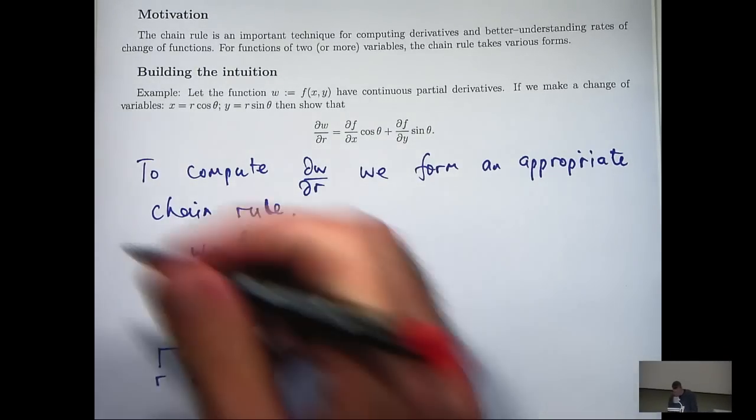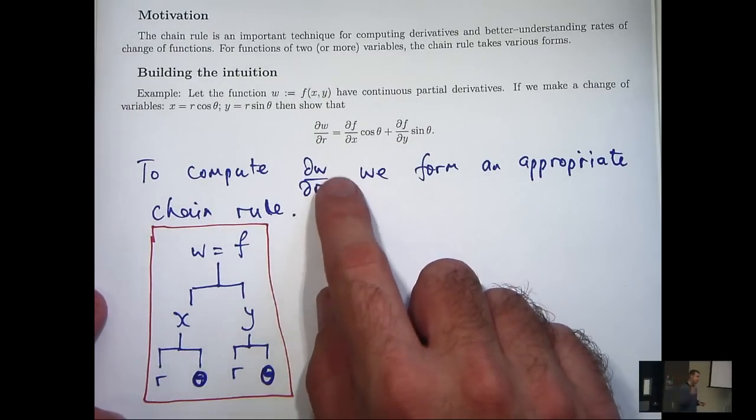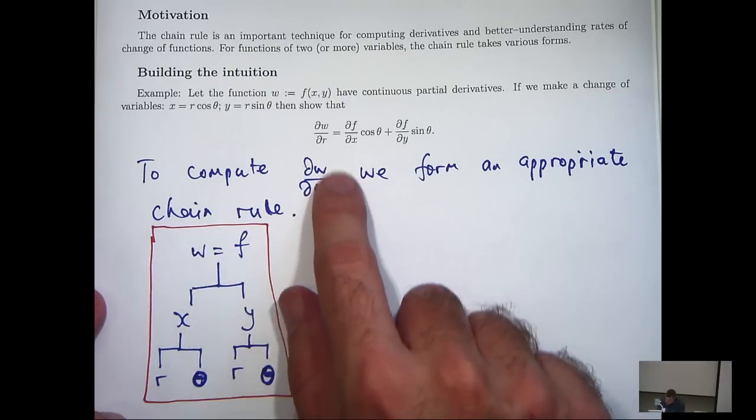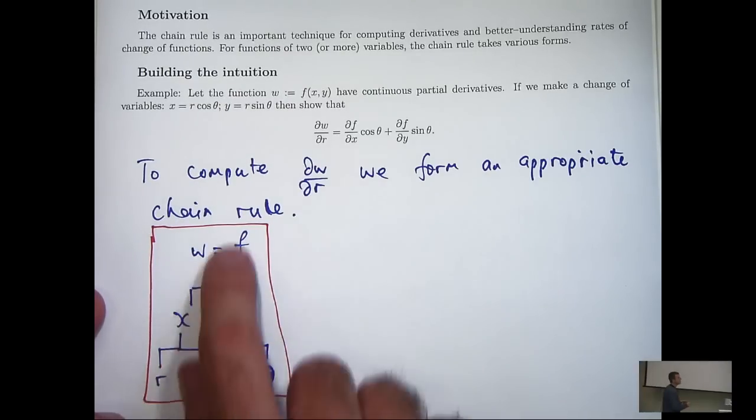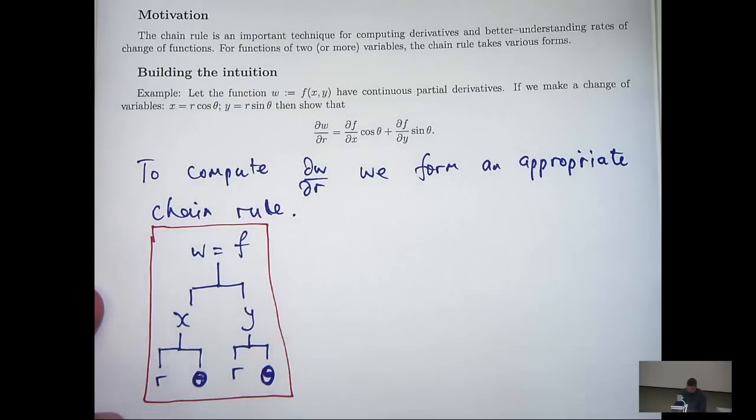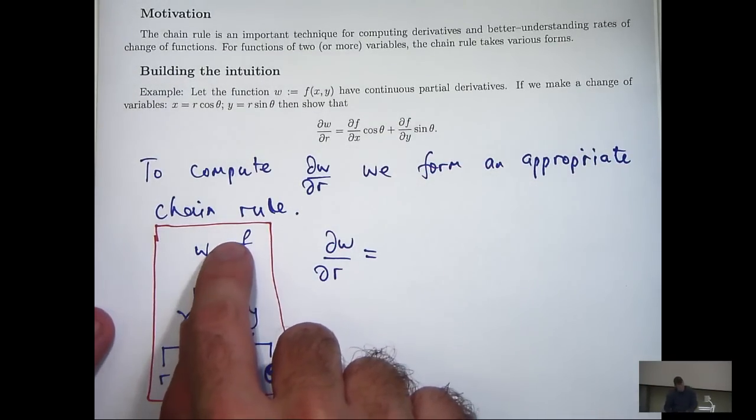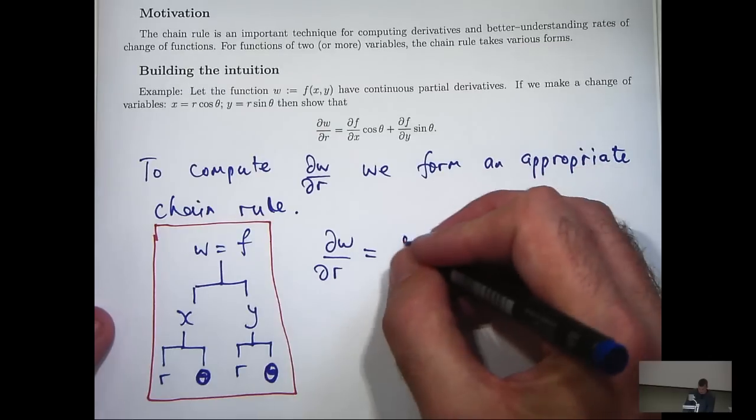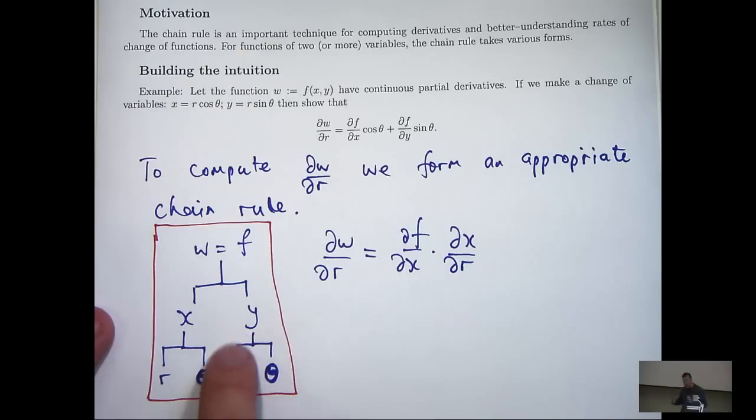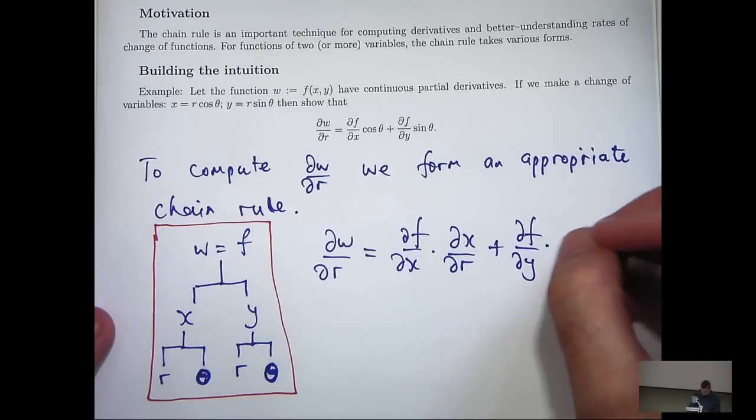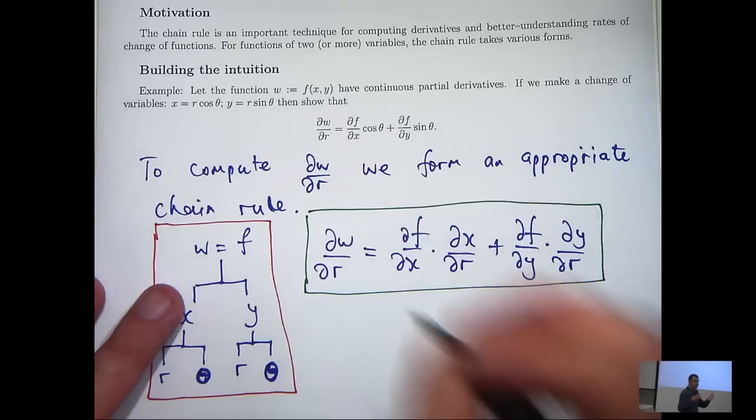Okay. So now what I can do is actually use this little diagram to formulate the chain rule to calculate dw/dr. What I do is I start at the top, and because I want to calculate dw/dr, I look at all the branches that take me down, all the paths that take me down to an r. So I can go down this path here or this path here. Now, when I move from letter to letter, I form a derivative. So let's systematically just work through this. df/dx times dx/dr. And I add these together.